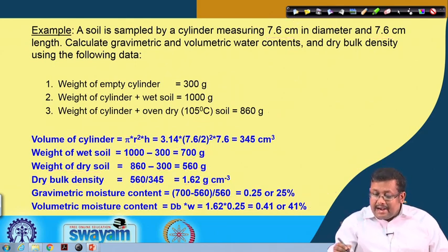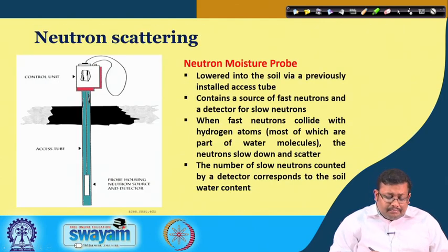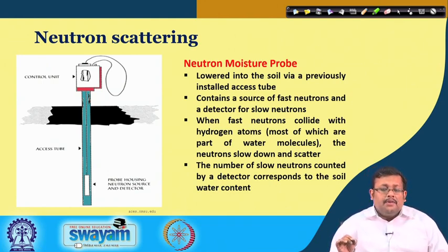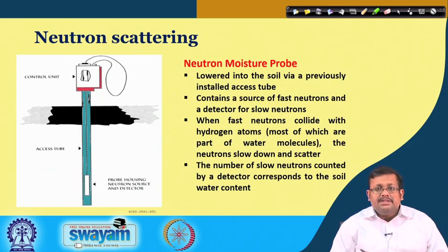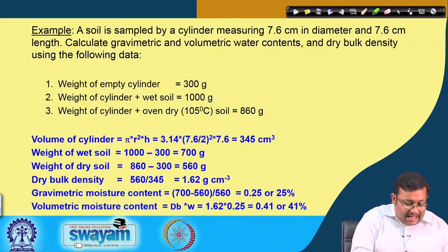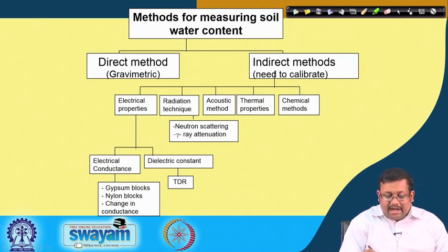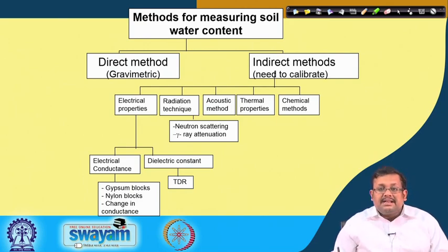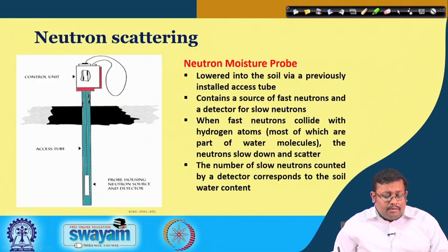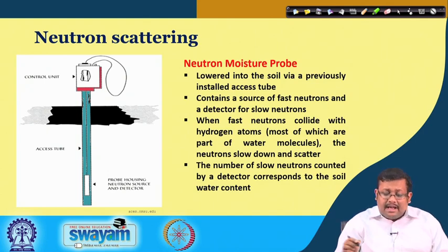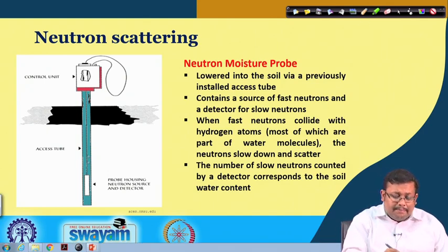Let us move ahead and see the other aspects of measurement of soil moisture. Among the indirect methods, the neutron moisture probe or neutron scattering is very important. There are two types of radiation techniques: neutron scattering and gamma ray attenuation. This is the picture of the neutron moisture probe — the probe is lowered into the soil.